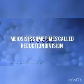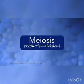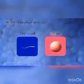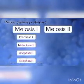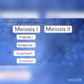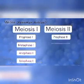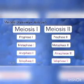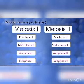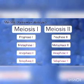Meiosis is sometimes called reduction division — it is the type of cell division that produces gametes. By gametes, we mean sex cells such as pollen cells in males and egg cells in females. Meiosis is divided into two sets of division: meiosis one and meiosis two. Meiosis one has four phases: prophase one, metaphase one, anaphase one, and telophase one. Meiosis two also has four phases: prophase two, metaphase two, anaphase two, and telophase two. Let's look at what happens during meiosis one.